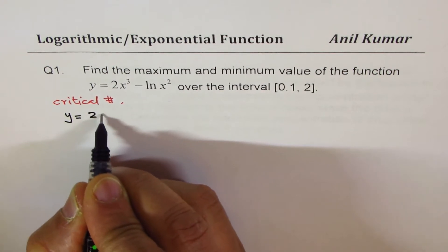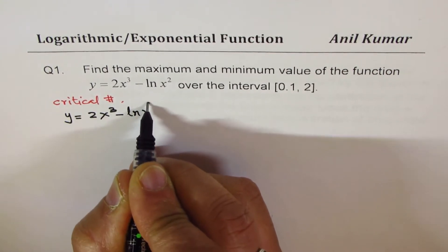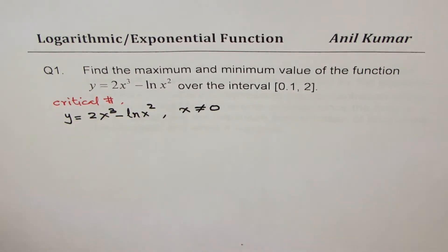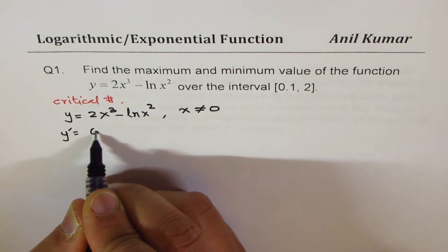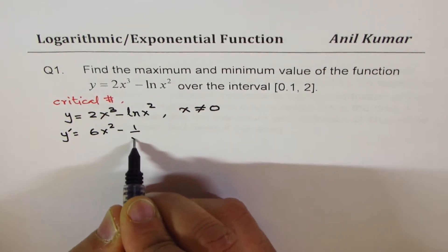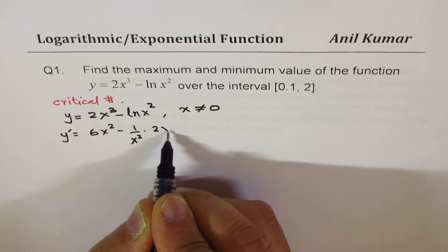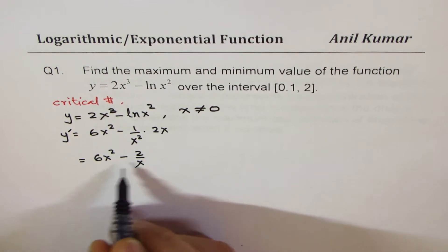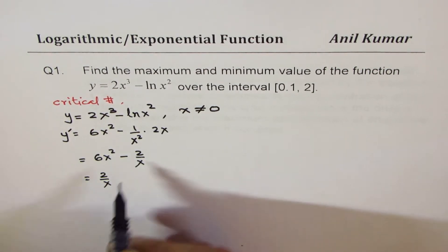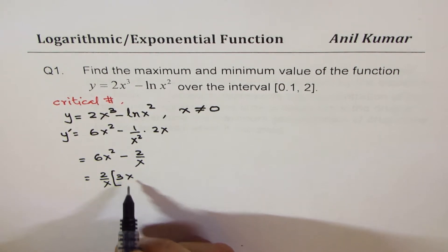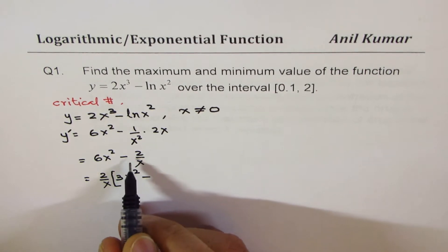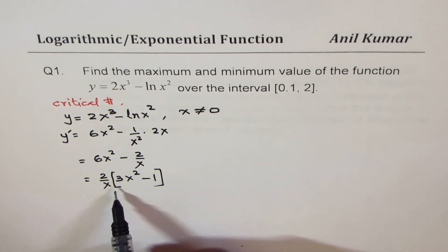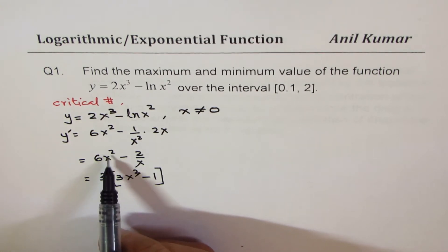We have the function y = 2x³ − ln(x²). The domain is all real values except x = 0. The derivative of this function is 6x² minus, for ln(x²), we get 1/x² times the derivative of x², which is 2x. So we can write this as 6x² − 2/x. Taking 2/x as a common factor, we get 2/x·(3x³ − 1).